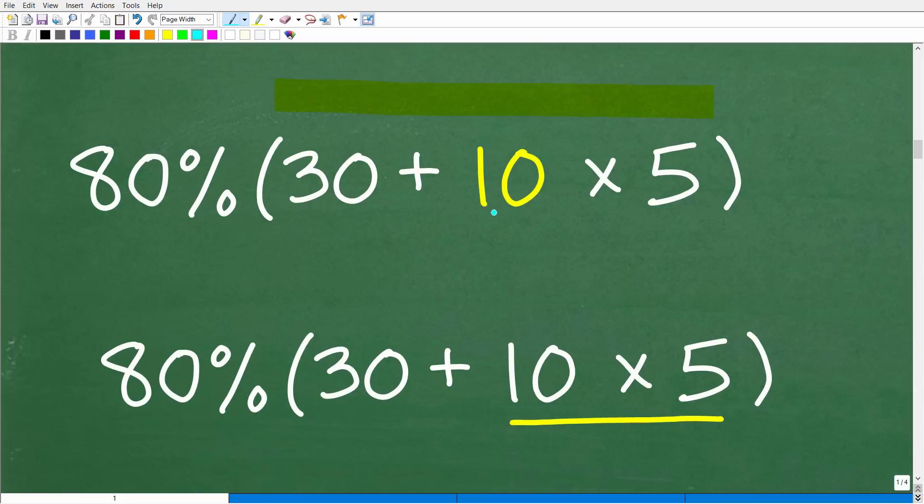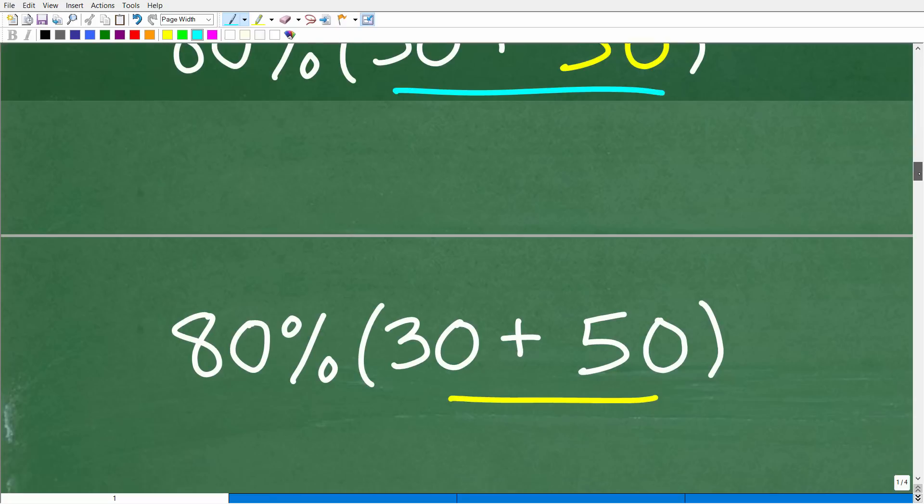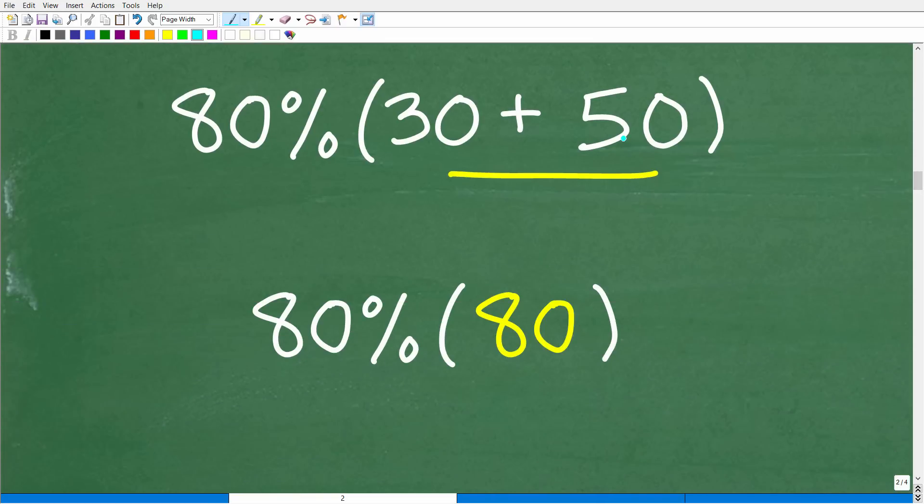The P part of PEMDAS is not over with until you finish everything in here. And this is hopefully pretty easy for you to see. Here we have addition, this is multiplication. Certainly multiplication is going to trump addition. So we're going to do 10 times 5, which of course is going to be 50. You can see we're almost done. All we have to do is take 30, add it to 50, and we'll be done with our parentheses part. And so we're down to 80% of 30 plus 50, which of course is 80.